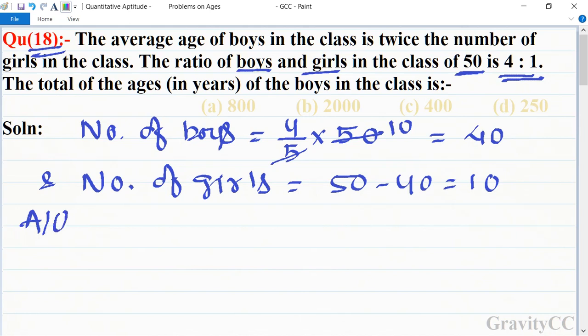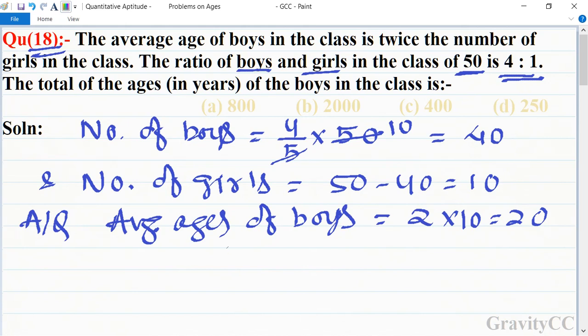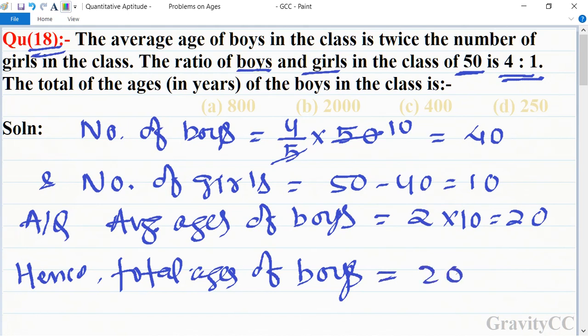According to the question, average age of boys is equal to twice the number of girls, so it is equal to 20. Hence, total age of boys is equal to 20 into 40, which is equal to 800.